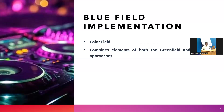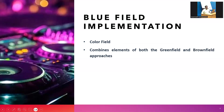The final is bluefield implementation, also called color field implementation. It combines both the greenfield and brownfield approaches. The best of greenfield and the best of brownfield are taken into consideration. Bluefield can also be called hybrid implementation — it is a combination of both greenfield and brownfield.